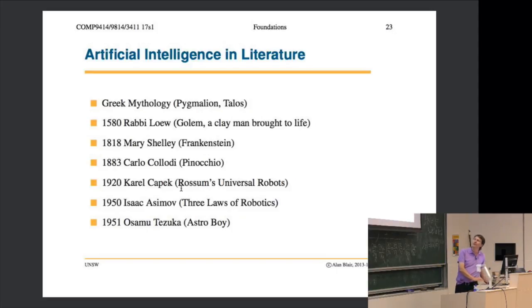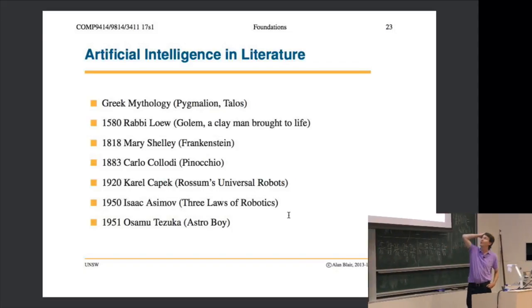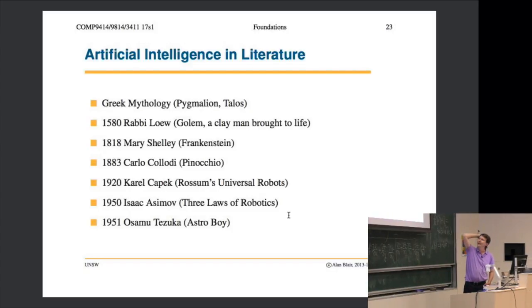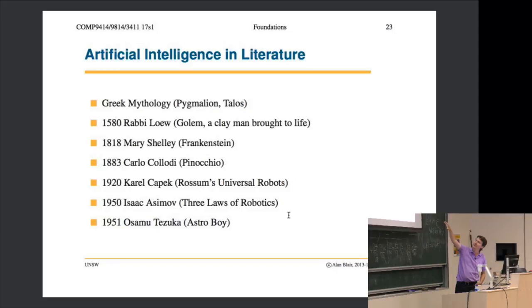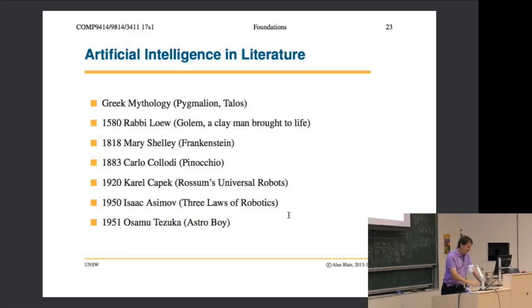Rossum's Universal Robots - that's actually the first time the word robot was ever used, in this 1920 play by Karel Čapek. Then we got science fiction and Isaac Asimov, and finally Astro Boy or the mighty atom. I've actually got my own Astro Boy here.